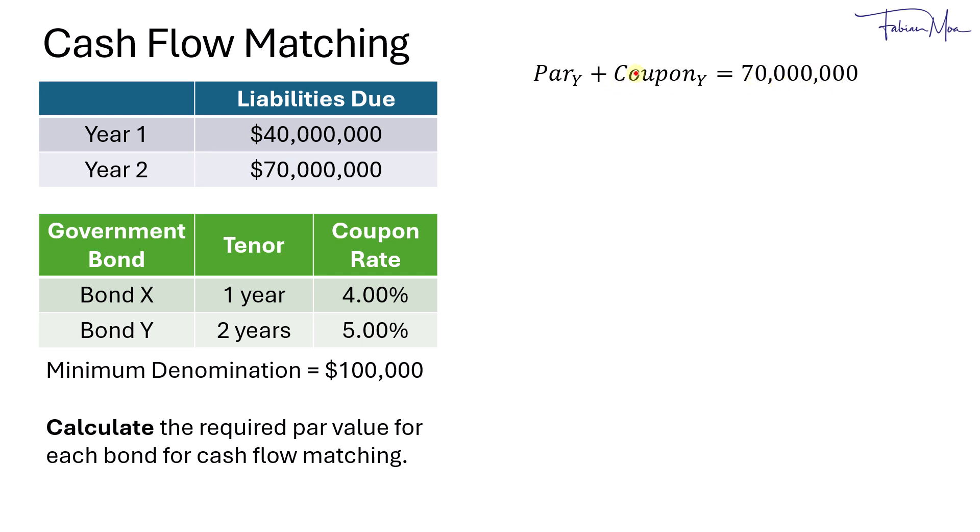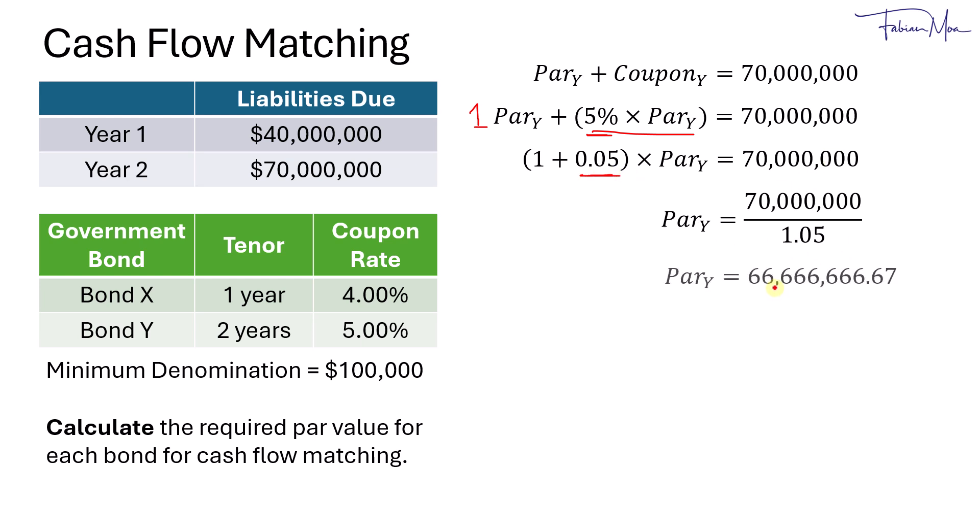To calculate the coupon, the coupon would be based on 5% of par. So that's 5% times par of bond Y. This is 1 unit of par and this is 5%. So we can factor out the 1 plus 5%, so that's 1 plus 0.05. And to get the par of bond Y, we'll take 70 million divided by 1.05, which is 1 plus the coupon rate. And we'll get $66,666,666.67.